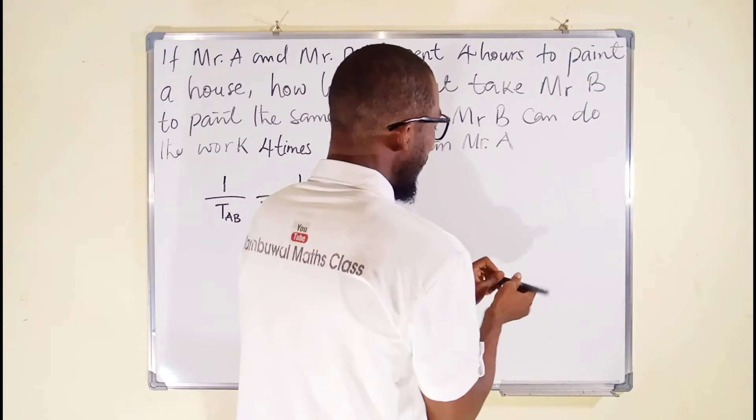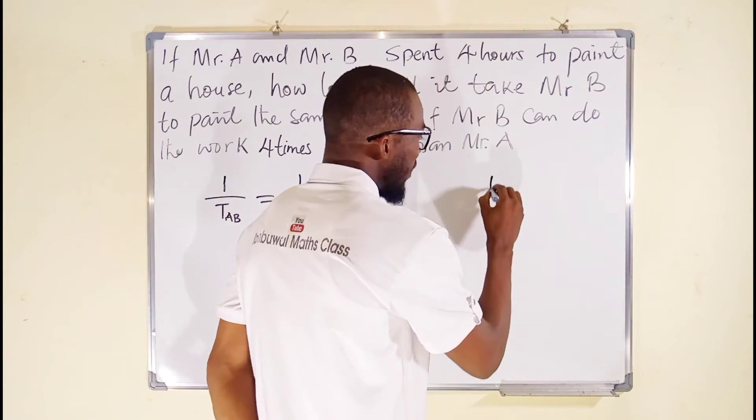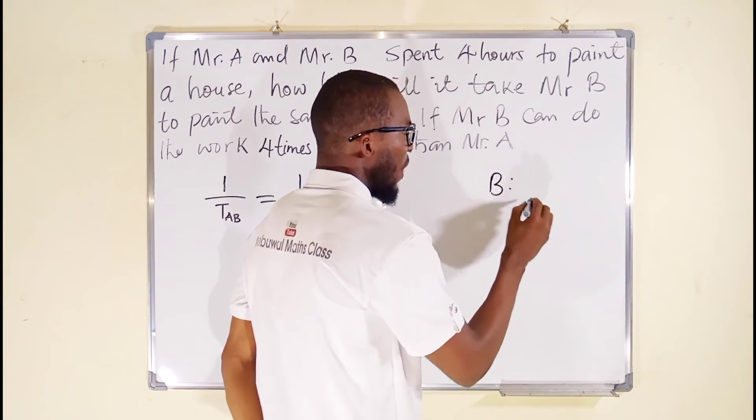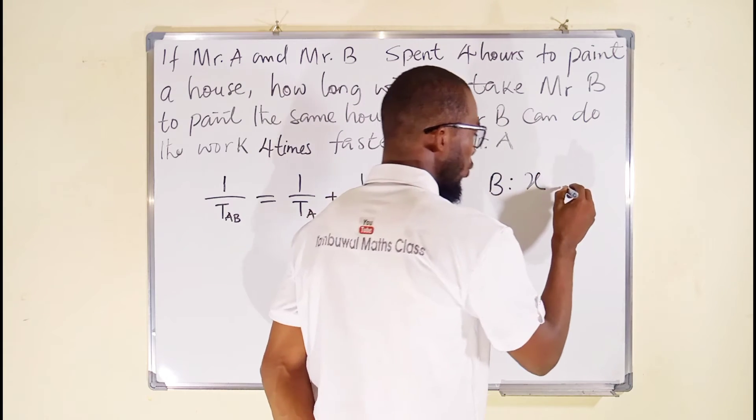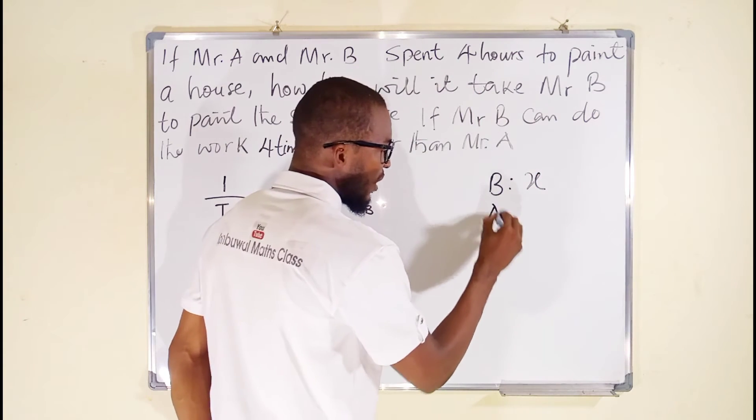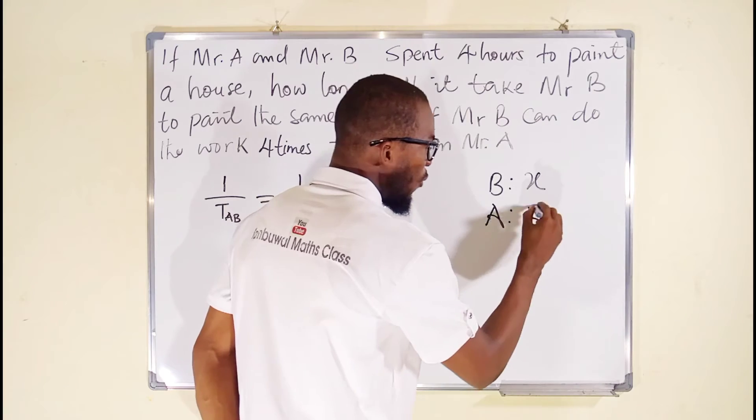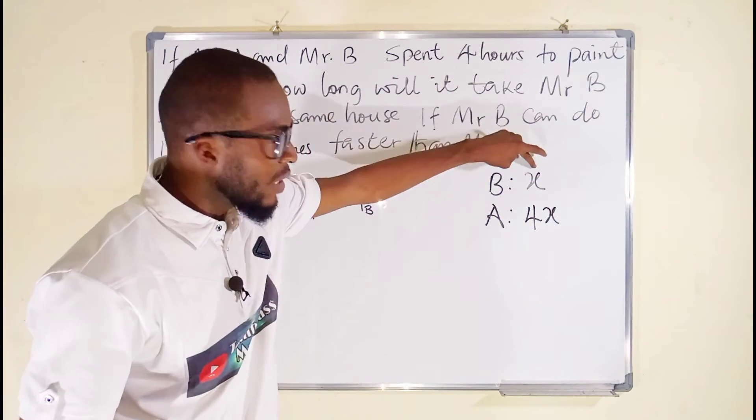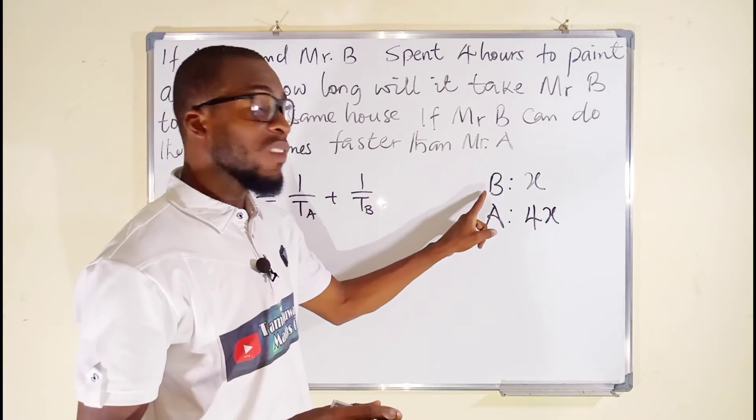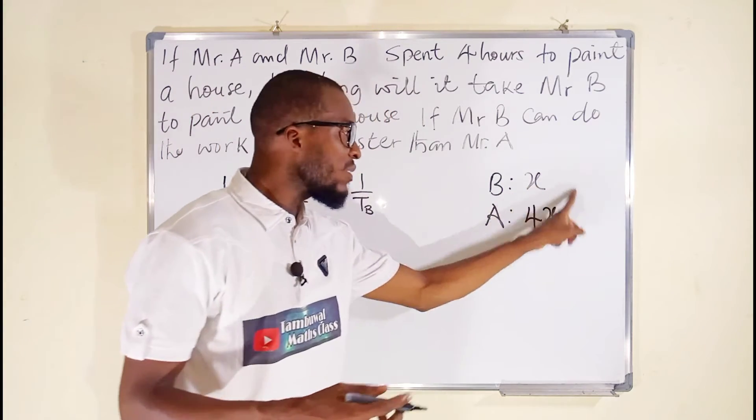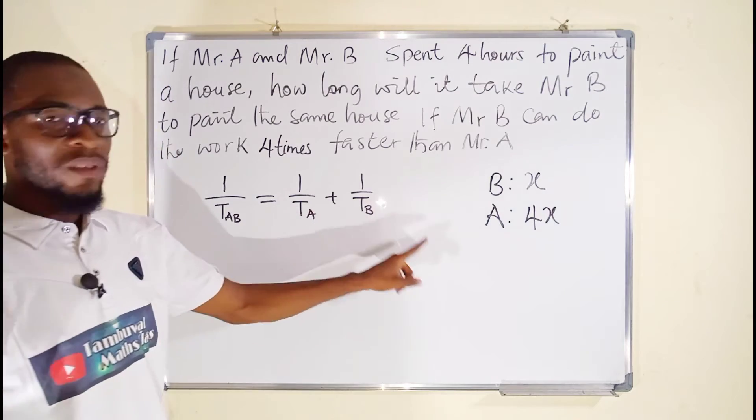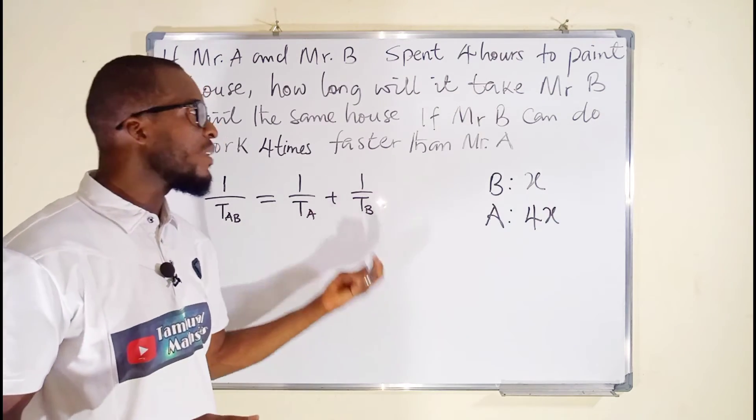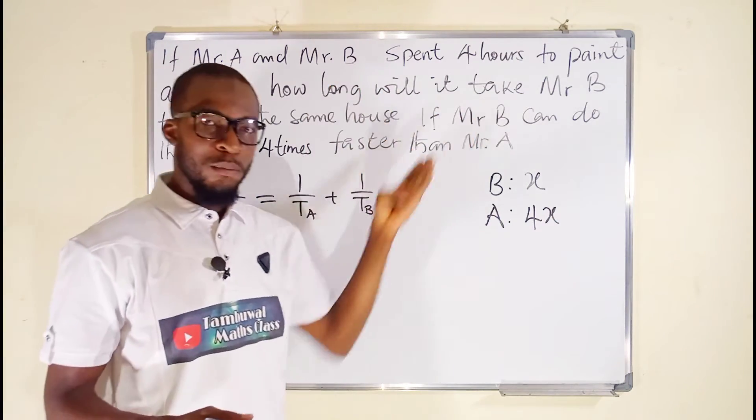So it means that if Mr. B takes x hours to do the work, it is going to take Mr. A four times that to do the same work—four times the time taking Mr. B. Because we learned that Mr. B can do the work faster, we can now replace this time for Mr. A and Mr. B to solve for x, which will determine the time taking Mr. B to do the work.